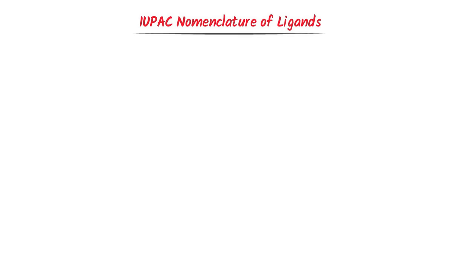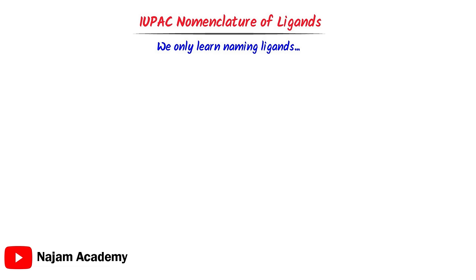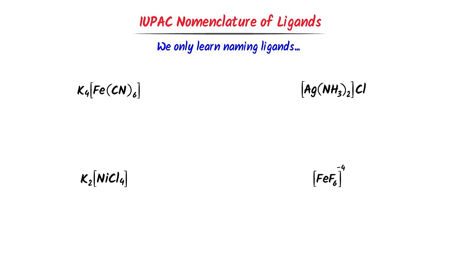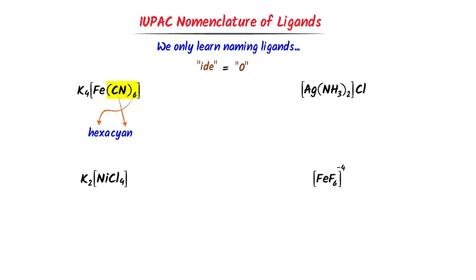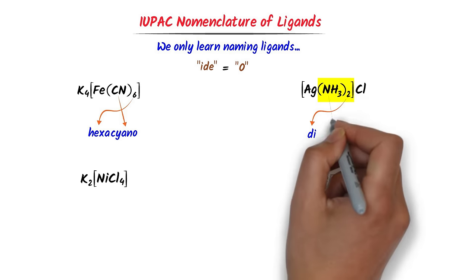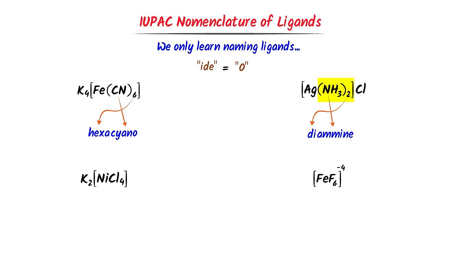Now we will learn IUPAC nomenclature of ligands. We will only learn naming ligands because it will make things super easy. For example, consider this coordination compound. We know that this is the coordination sphere. This is the ligand cyanide, and this six means six cyanide ions. For this six, I write 'hexa'. For the cyanide ligand, since it is a negative ligand, we remove the '-ide' and replace it with '-o', giving us 'cyano'. Thus I get 'hexacyano'. Secondly, in case of this coordination compound, the ligand is ammonia NH3. For this two, I write 'di', and for ammonia I write 'amine', thus I get 'diamine'.